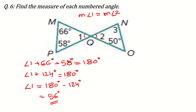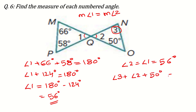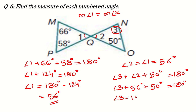After finding angle 1, angle 2 will also be equal to angle 1 since they are vertical angles, so angle 2 equals 56 degrees as well. Now we can find angle 3: angle 3 plus angle 2 plus 50 equals 180 degrees, so angle 3 equals 180 minus 106, which is 74 degrees.